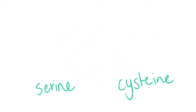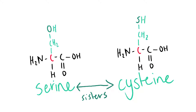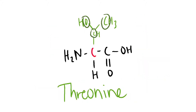Serine and cysteine kind of sound like sisters — they both start with the S sound, so they both have similar structures. Serine has an OH, while cysteine has an SH. Like the name suggests, threonine has three backbone atoms: a carbon stem, splitting into a carbon leaf and an oxygen leaf, signified by the O in threonine.